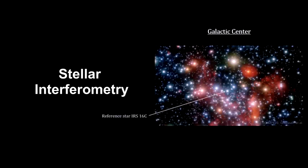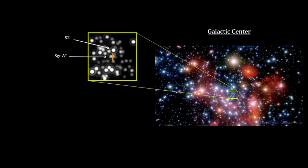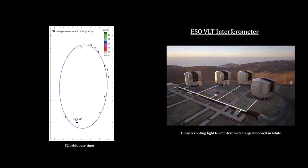The Hubble Space Telescope can resolve angles on the sky as small as 50 milli-arc-seconds. The angular distance between S2 and Sag A-star at pericenter was just 15 milli-arc-seconds — that's 42 billionths of one degree and three times smaller than Hubble can resolve. To follow S2 as closely as they did, astronomers had to use a stellar interferometer. These kinds of telescopes can resolve images 30 to 40 times smaller than optical telescopes, making them extremely important tools for studying the galactic center, as well as exoplanets. They can even resolve sunspots on nearby stars.